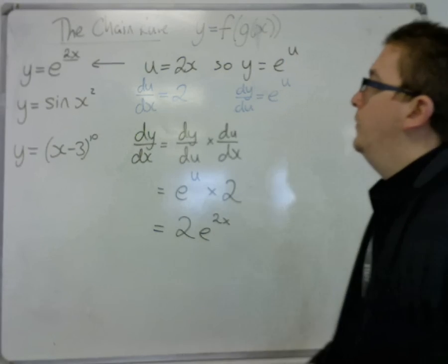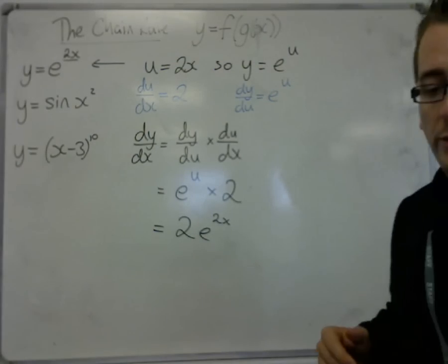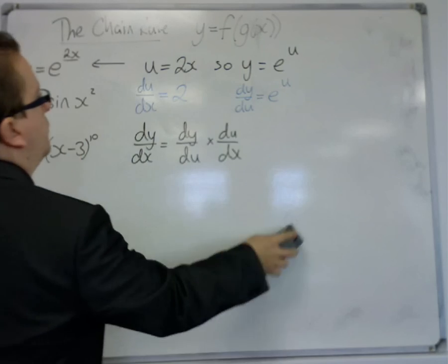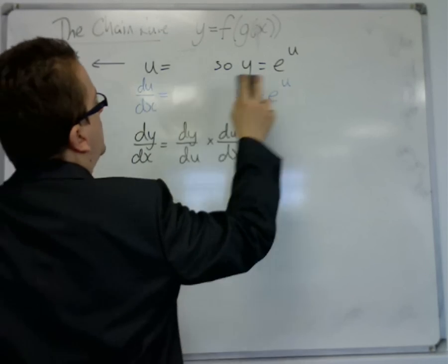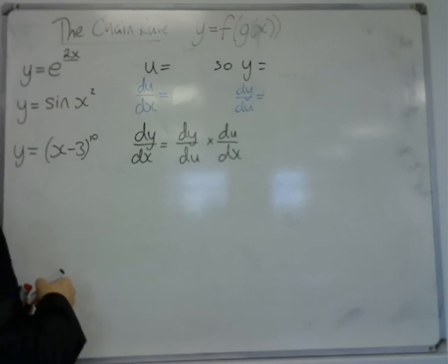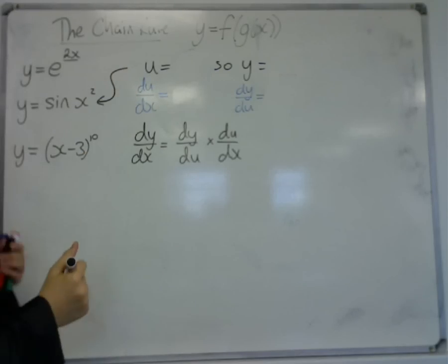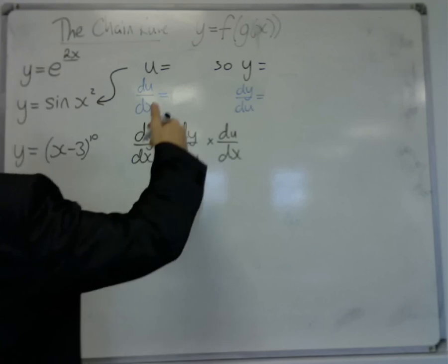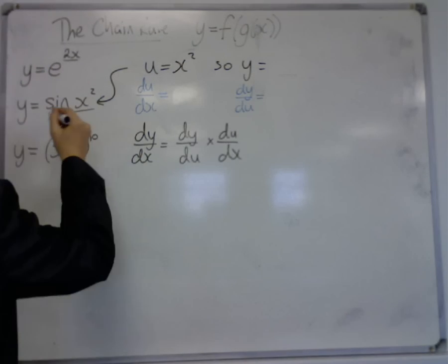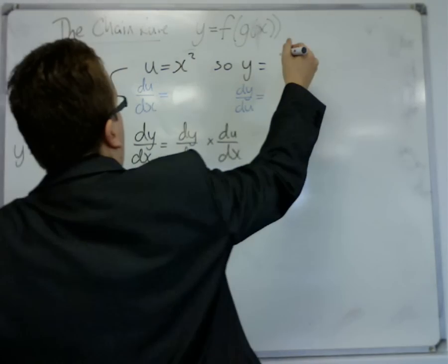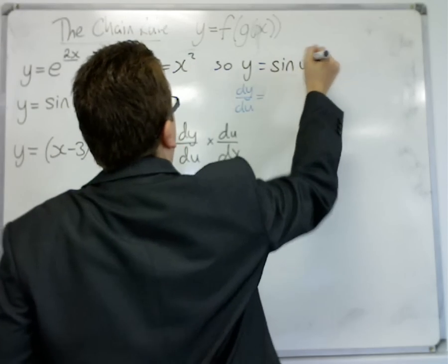The next couple of examples will work in very similar ways. So let's go through those as well. Now we're on to example 2. So in this case, I set my u equal to the x squared, that is the function inside that I'm looking at, and the function on the outside is sine. So I now have y equals sine of u.